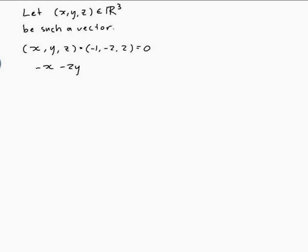Okay and it's perpendicular to 1, 3, minus 1 as well. So x, y, z dot 1, 3, minus 1 should be 0 as well. And expanding that out gives me x plus 3y minus z is 0.